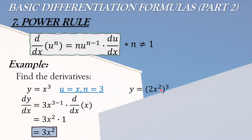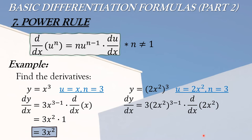Another example: y equals (2x squared) cubed. Ang n natin dito ay yung nasa labas na exponent, ibig sabihin yung 2 na exponent dito ay kabilang sa u. So ang u natin ay 2x squared at ang n ay 3. Magiging dy/dx equals 3 times (2x squared) raised to n minus 1, or 3 minus 1, times the derivative of u or derivative ng 2x squared. Kailangan natin hanapin ang derivative ng 2x squared using the power rule again, then bring down: 3 minus 1 is 2, times the derivative of 2x squared is 4x.